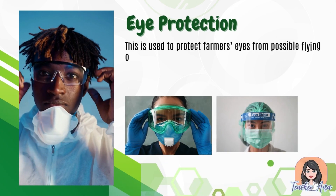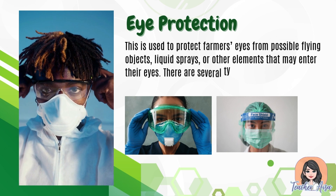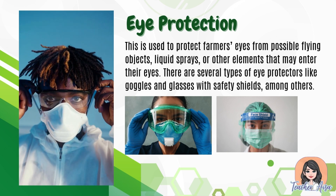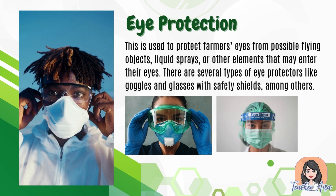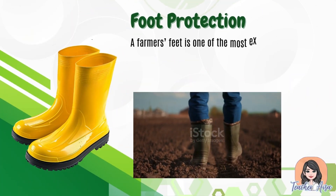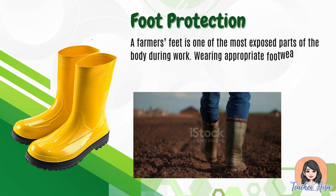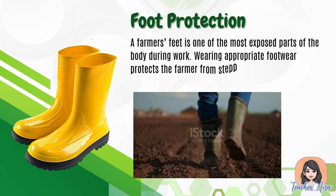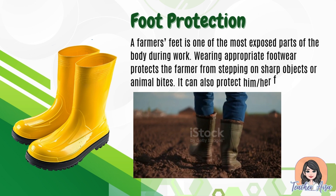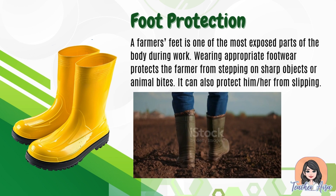Eye protection is used to protect farmers' eyes from possible flying objects, liquid sprays, or other elements. There are several types of eye protectors like goggles and glasses with safety shields. Foot protection — a farmer's feet is one of the most exposed parts of the body during work. Wearing appropriate footwear protects the farmer from stepping on sharp objects, animal bites, and slipping.